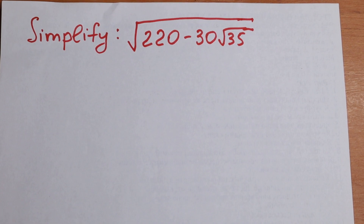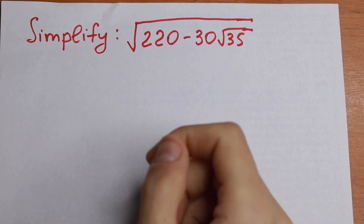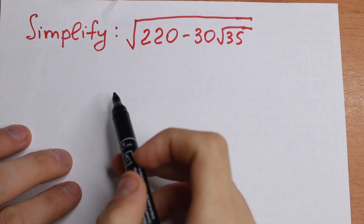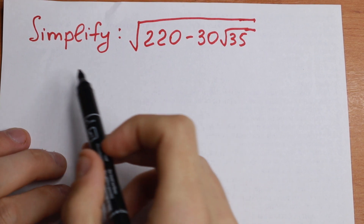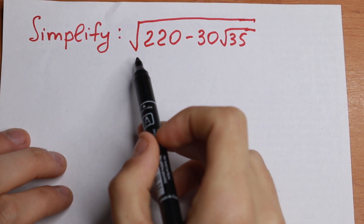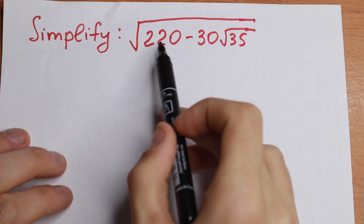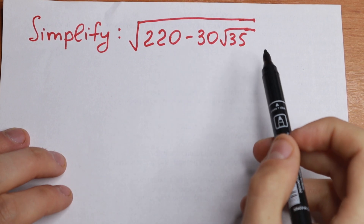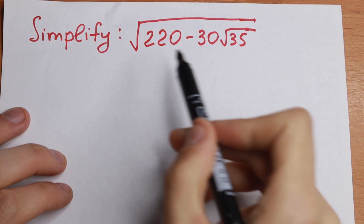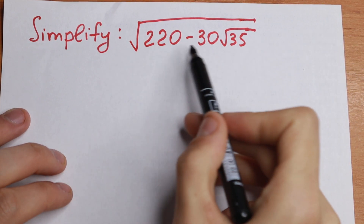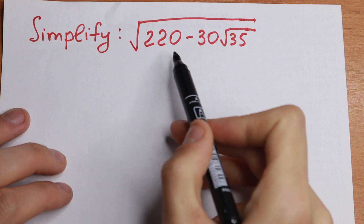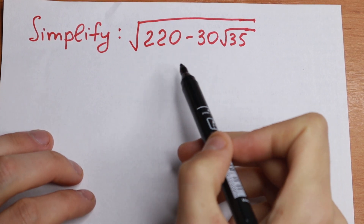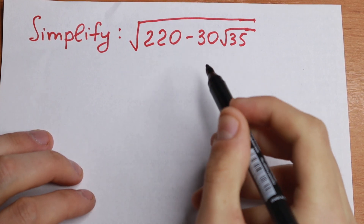Hello everyone, welcome to MathMod. Today we have an interesting algebra problem — a real good problem. We need to simplify the square root of 220 minus 30 times the square root of 35. This is not an easy problem, but I want to show you a really good approach — really good steps — for how to simplify this expression.